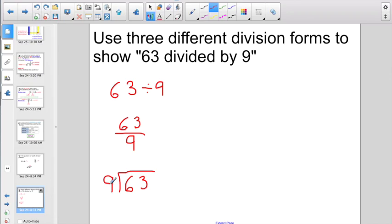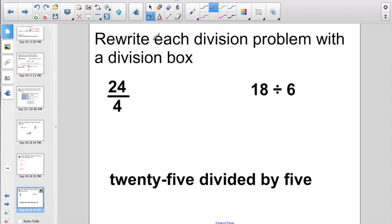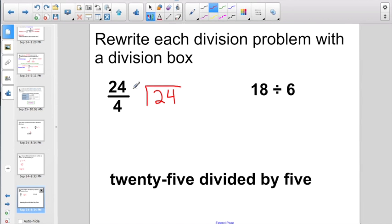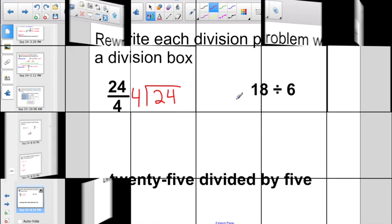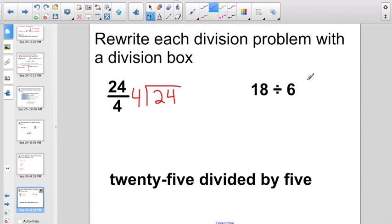So, here, they're going to ask us to rewrite each division problem using a division box. So, this is 24 divided by 4. 24 is my dividend, the number I am dividing, so he goes inside the box. 4 is my divisor, the number I'm dividing by, so he goes outside the box. 24 divided by 4. Here, I have 18 divided by 6. So, 18 is my dividend, he goes inside the box. 6 is my divisor, the number I'm dividing by, so he'll go outside the box.